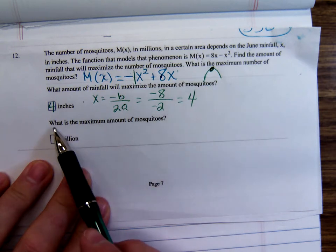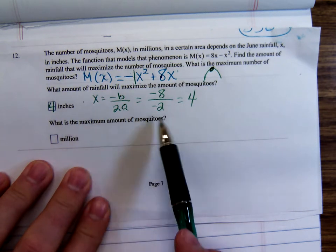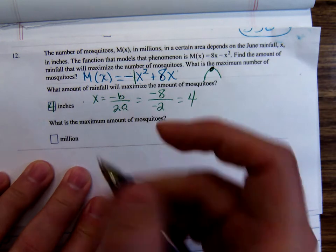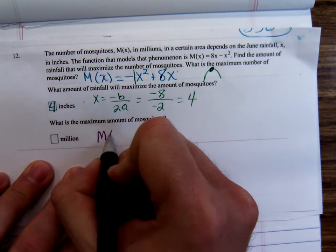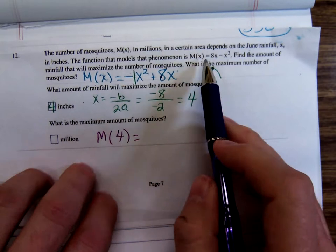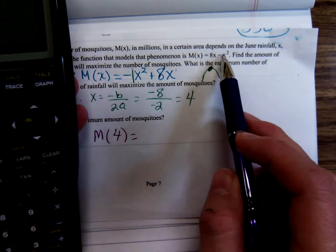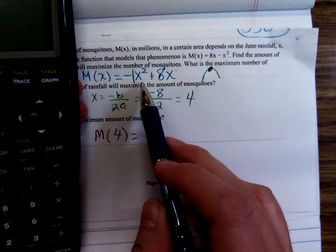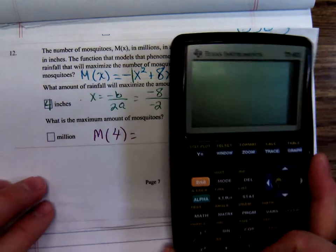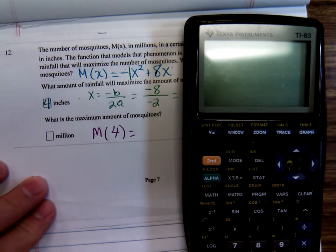How do we find that maximum number? Plug it in. Plug a 4 in. It doesn't matter which one you use. So I'll use the 8x - x² form. If you want to plug into the -x² + 8x, that's fine.